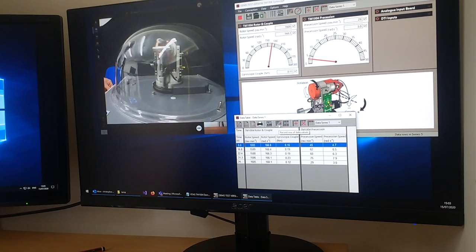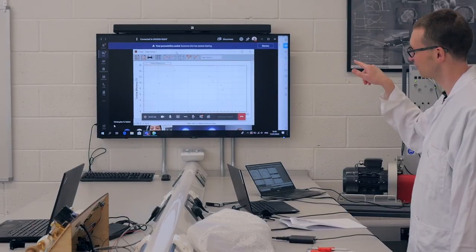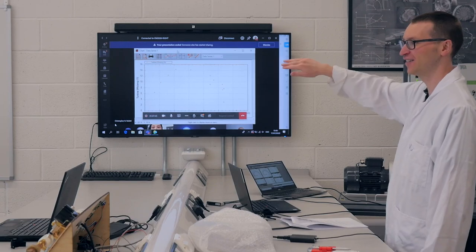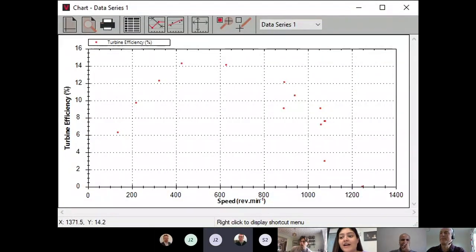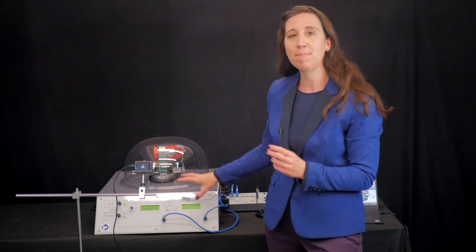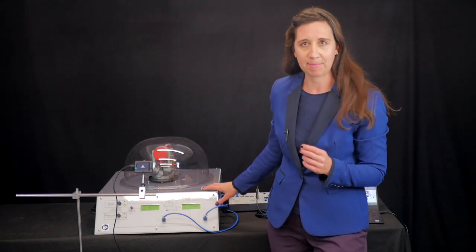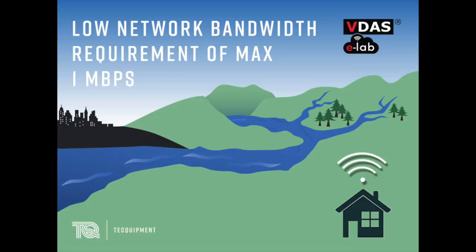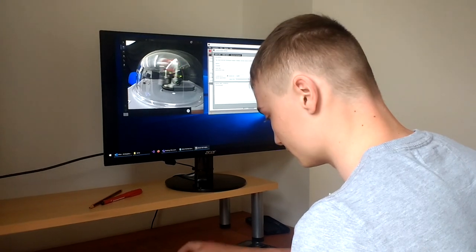It can also be used in a group scenario where one student from a group physically attends the lab to perform the experiment while the other team members remain at home recording and analyzing different data points. The VDAS eLab software works with Tech Equipment's VDAS enabled products like we have here with a gyroscope experiment which beyond the optional cameras and mounting requires no extra hardware. The low bandwidth requirement means that students in more remote areas of the world are not disadvantaged and are still able to engage in practical learning.